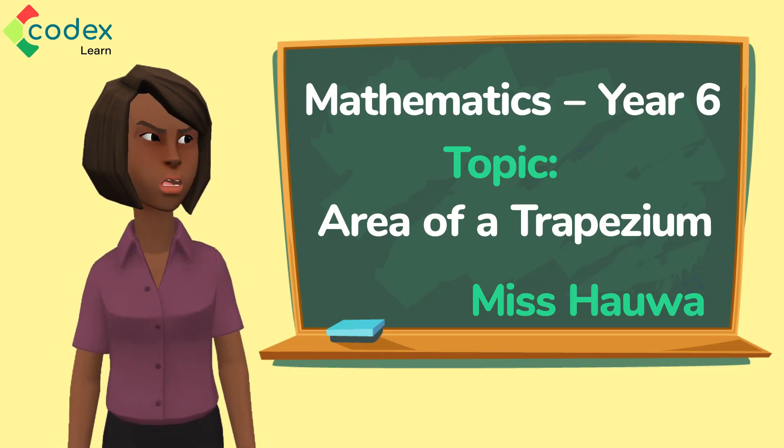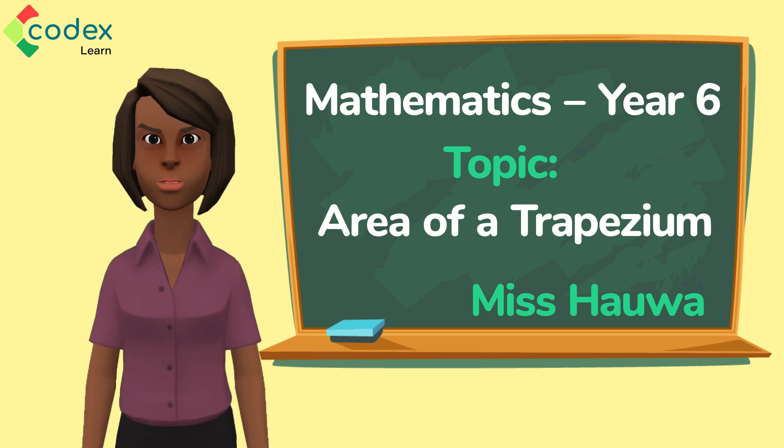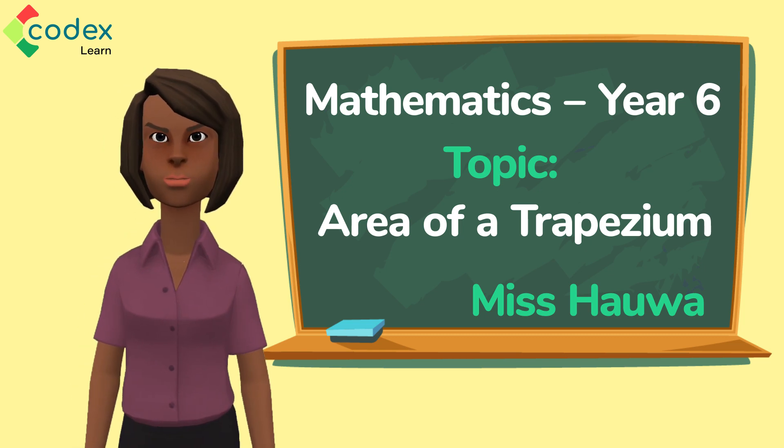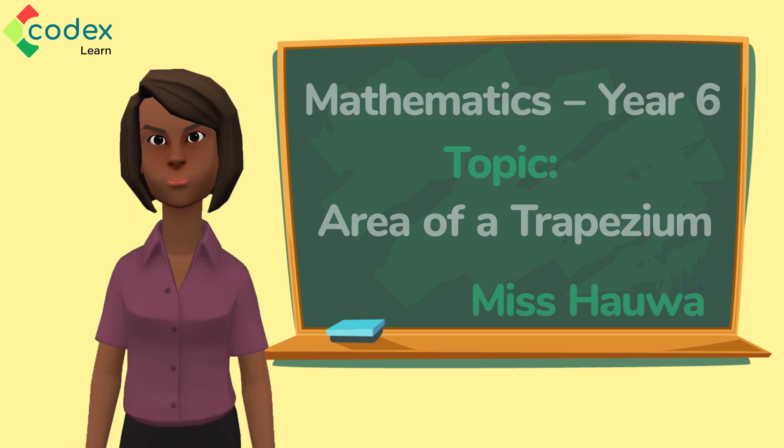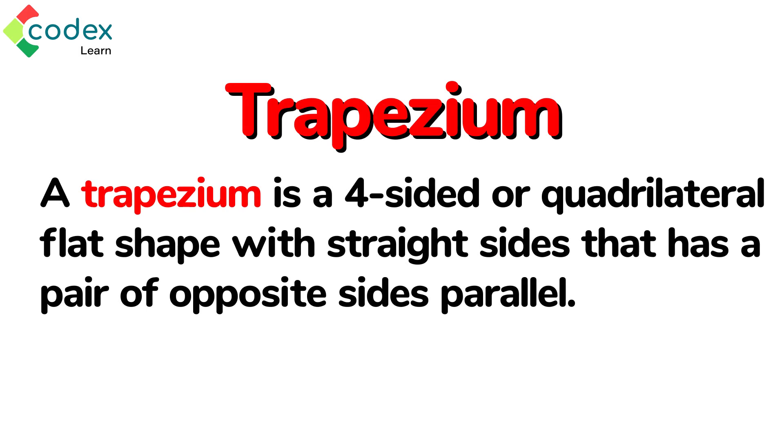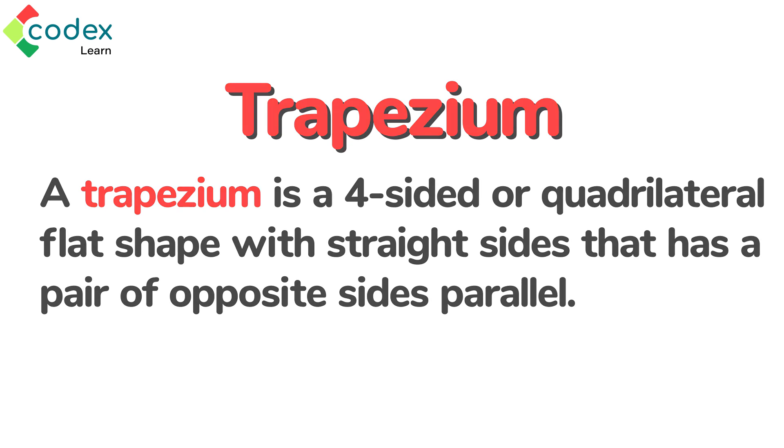In this lesson we will learn how to find the area of a trapezium. Are you ready? Let's begin. A trapezium is a four-sided or quadrilateral flat shape with straight sides that has a pair of opposite sides parallel.